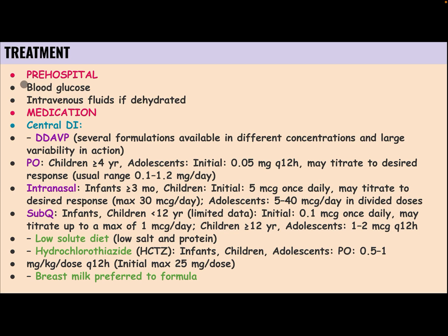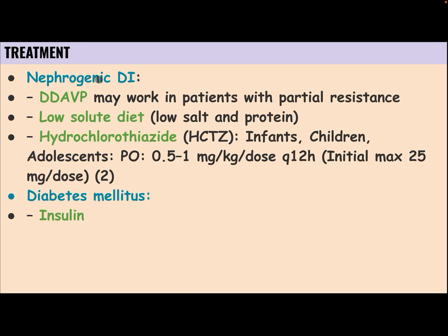Pre-hospital treatment includes blood glucose control. Intravenous fluids are used for dehydrated patients. For central diabetes insipidus, medication includes DDAVP (desmopressin), given orally, intranasally, or subcutaneously. For nephrogenic diabetes insipidus, treatment includes a low solute diet, hydrochlorothiazide, and breast milk preferred over formula. Desmopressin and low solute diet may also be used. Diabetes mellitus is treated with insulin.